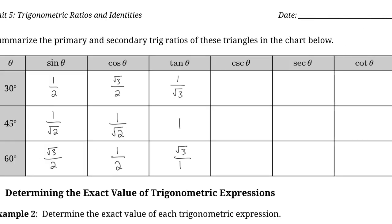Now let's do our secondary trig ratios, otherwise known as our reciprocal trig ratios, for our special triangles. Cosecant theta is just the reciprocal of sine theta, so we can take all of our sine ratios and flip them. The cosecant of 30 degrees is 2 over 1, or just 2. The cosecant of 45 degrees is the square root of 2 over 1. And the cosecant of 60 degrees is 2 over square root of 3. The secant ratio is the reciprocal of cosine: secant of 30 degrees is 2 over square root of 3, secant of 45 degrees is root 2, and secant of 60 degrees is 2 over 1, or just 2.